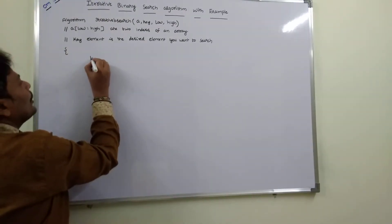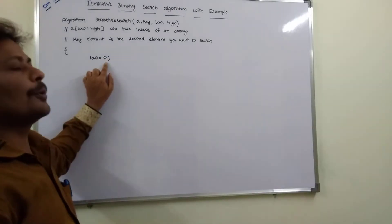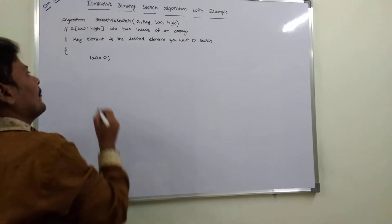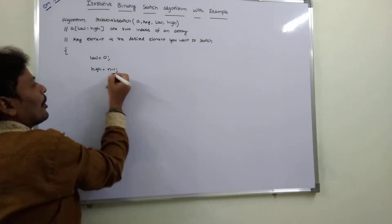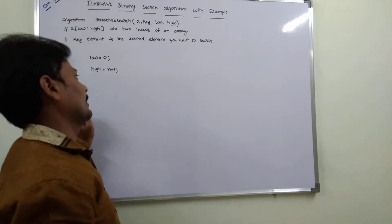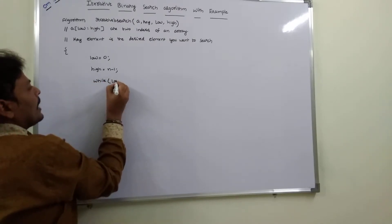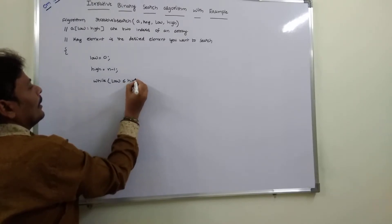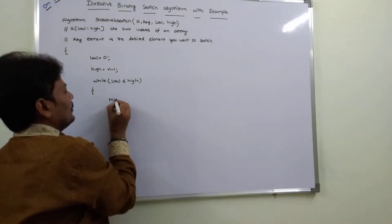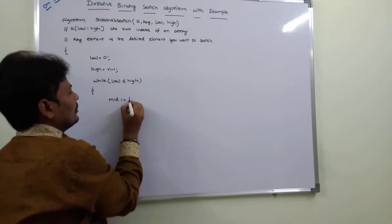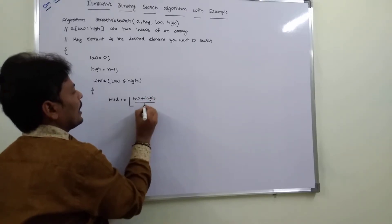Initially, low points to the first element of the array, that is index zero. High points to the last element of the array, that is n minus 1. The while loop condition is: while low is less than or equal to high. Inside the loop, we calculate mid = (low + high) / 2.